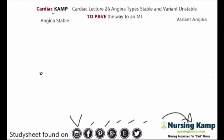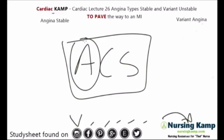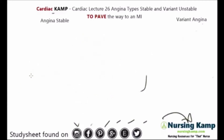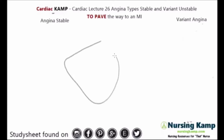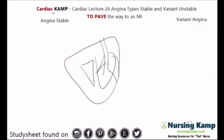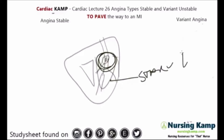So what is acute coronary syndrome — ACS? Acute coronary syndrome tells us there's an acute process going on. That acute process involves angina. Angina relates to the perfusion of the heart muscle — the ventricle and the coronary arteries around the outside. There's a blockage of some sort causing starvation of oxygen.